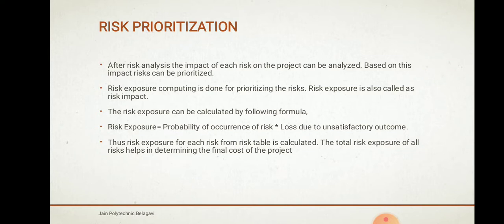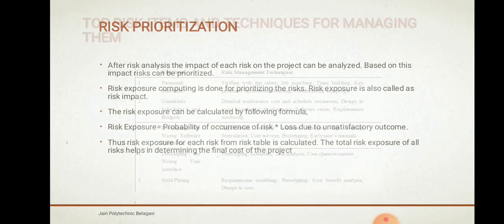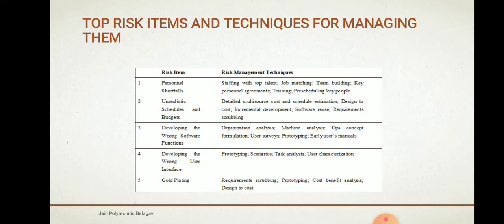Based on the impact, risks can be prioritized by computing the risk exposure. Risk exposure tells us how much the risk is going to cost the project. It is calculated using the formula: Risk Exposure = Probability of Occurrence of the Risk × Loss Due to Unsatisfactory Outcome. The total risk exposure for all risks helps in determining the final cost of the project.